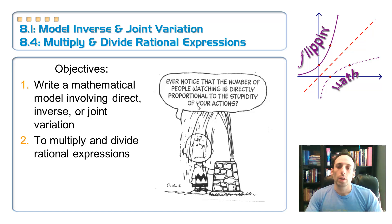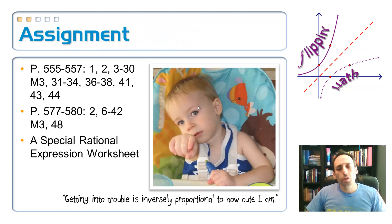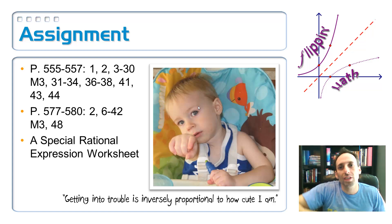So here now, the little Charlie Brown cartoon, you can understand what the heck he's saying now. Ever notice that? The number of people watching is directly proportional to the stupidity of your actions. What's he saying? He's saying is, however stupid the thing is that you're doing, that means the more people that are watching it. Rowan came up with his own. He says, getting into trouble is inversely proportional to how cute I am. What does that mean? That means, since he's super, super cute, he's hardly ever getting in trouble.